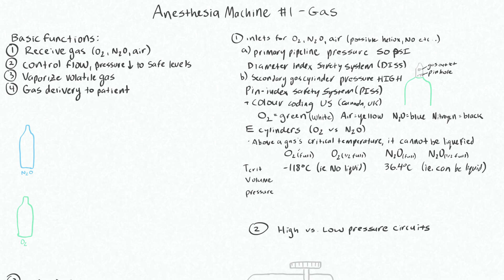The volume of oxygen that fits into a full E-cylinder is 660 liters, and the pressure of that is going to be 1900 PSI. An oxygen tank will only have oxygen in gas form — no liquid in this tank.